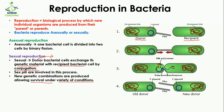The single-stranded genetic material in the recipient is then converted into a double strand. So after conjugation, both the donor cell and the recipient cell have their own genetic material. That was all about reproduction in bacteria. If you have any questions, you can ask in the comment section. I will see you in the next video.